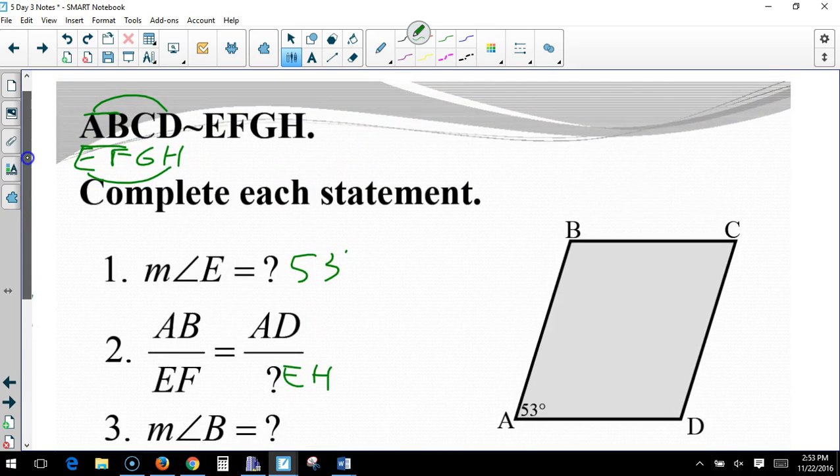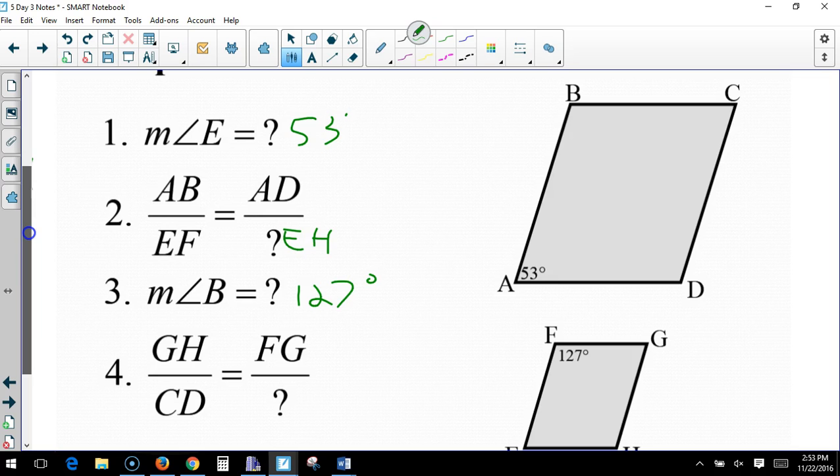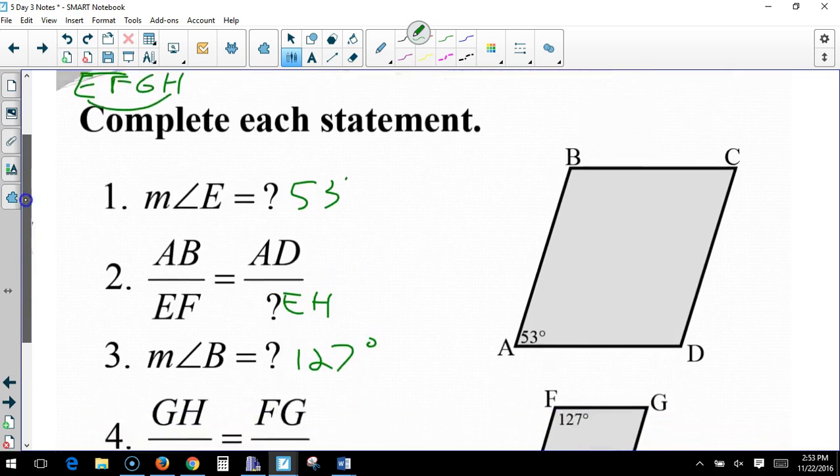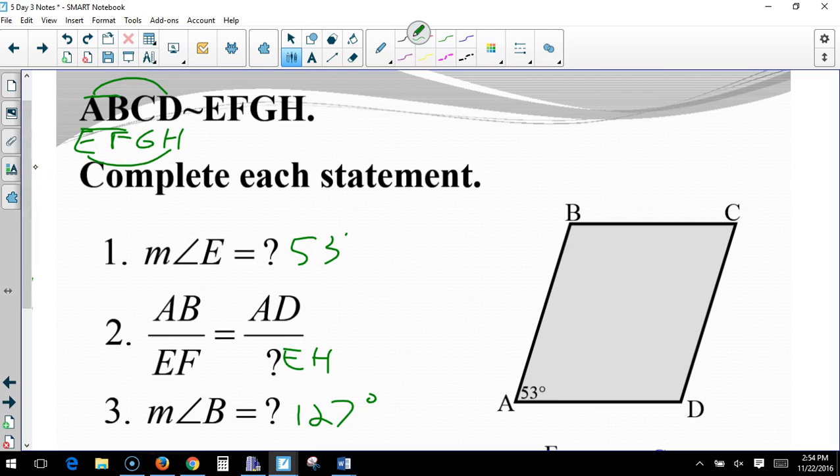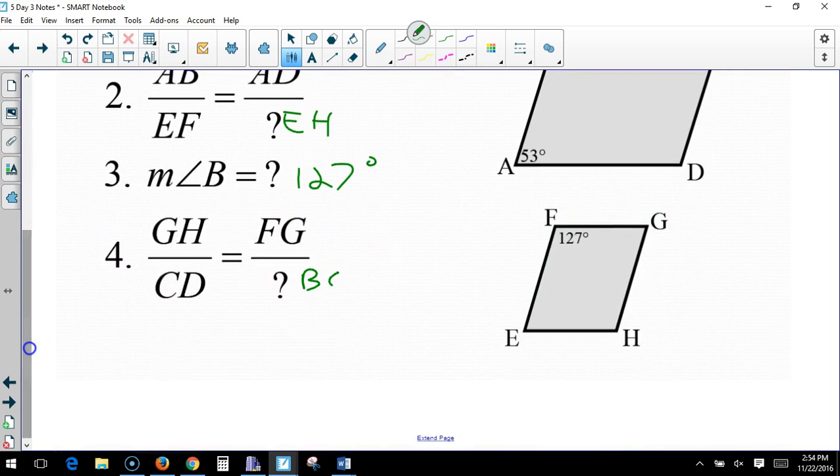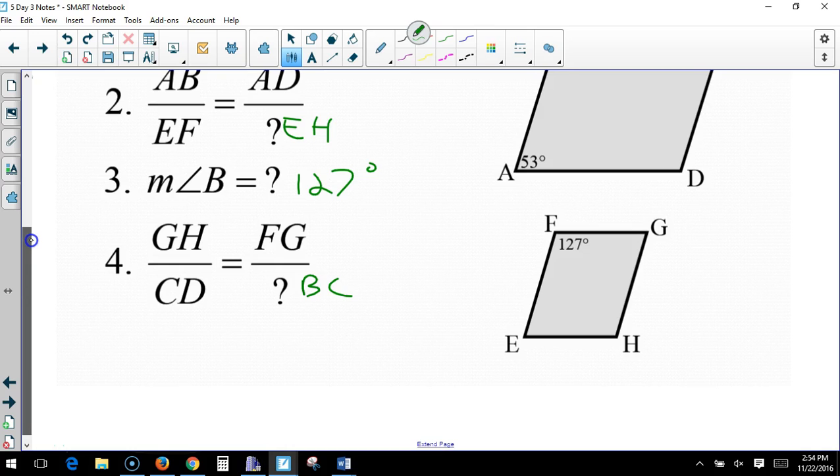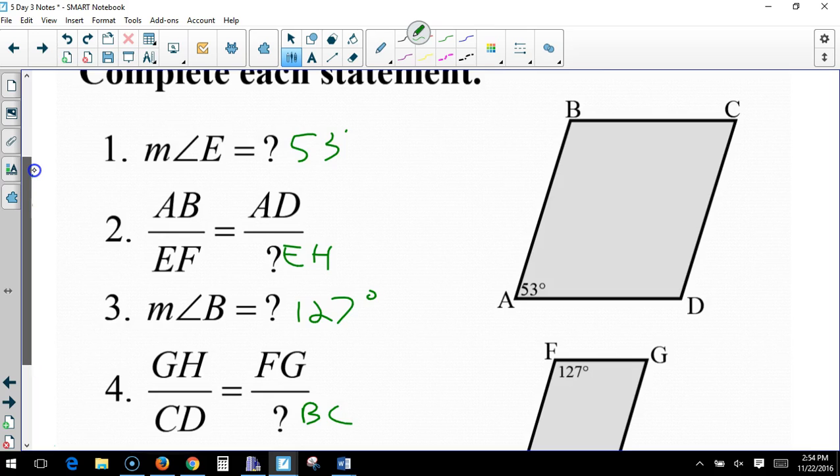Well, the measure of angle B, what does it line up with? F. So, F is 127. Which means B is 127 degrees. GH and CD. So, GH is here. CD. So, F to G would be B to C. And you've got to keep the same order.